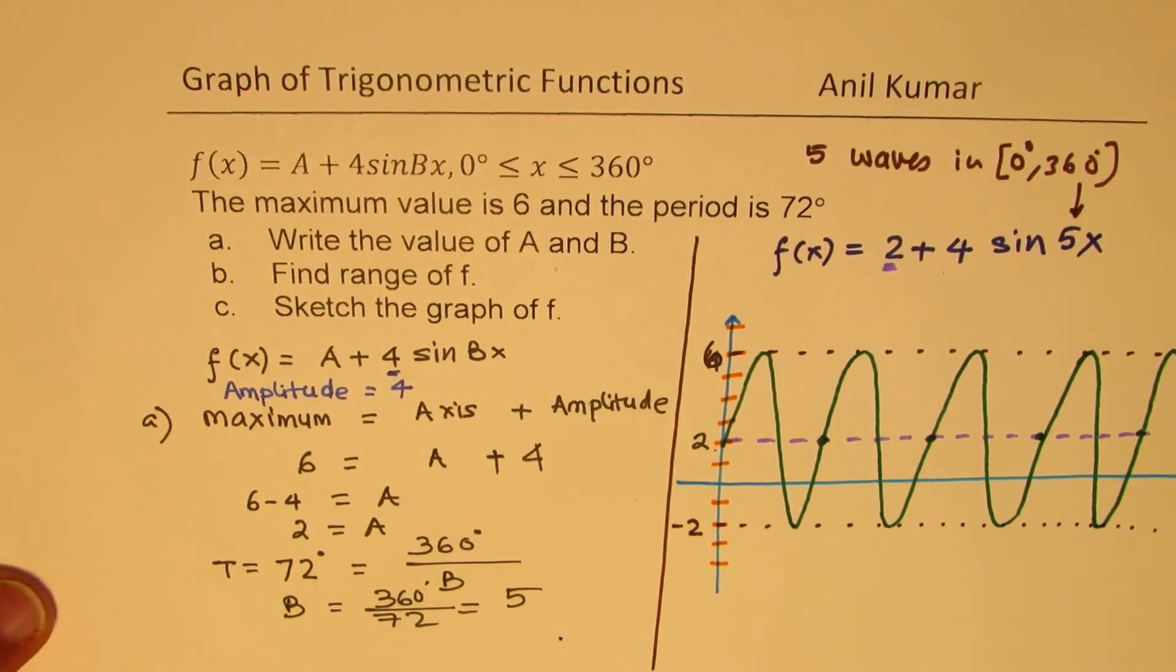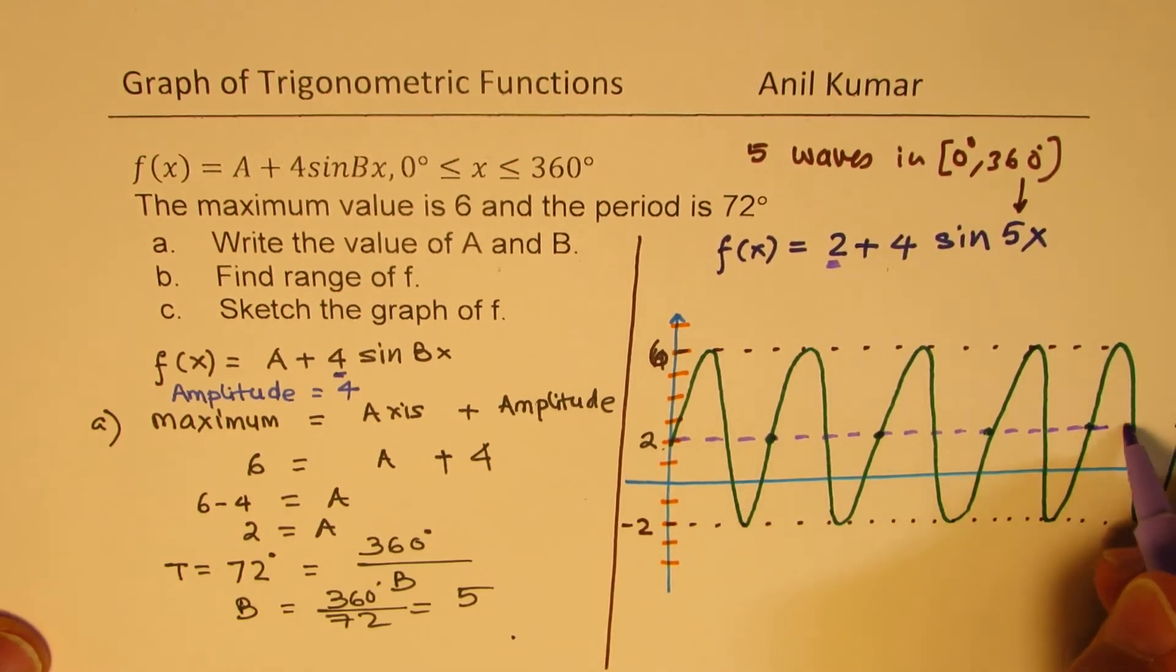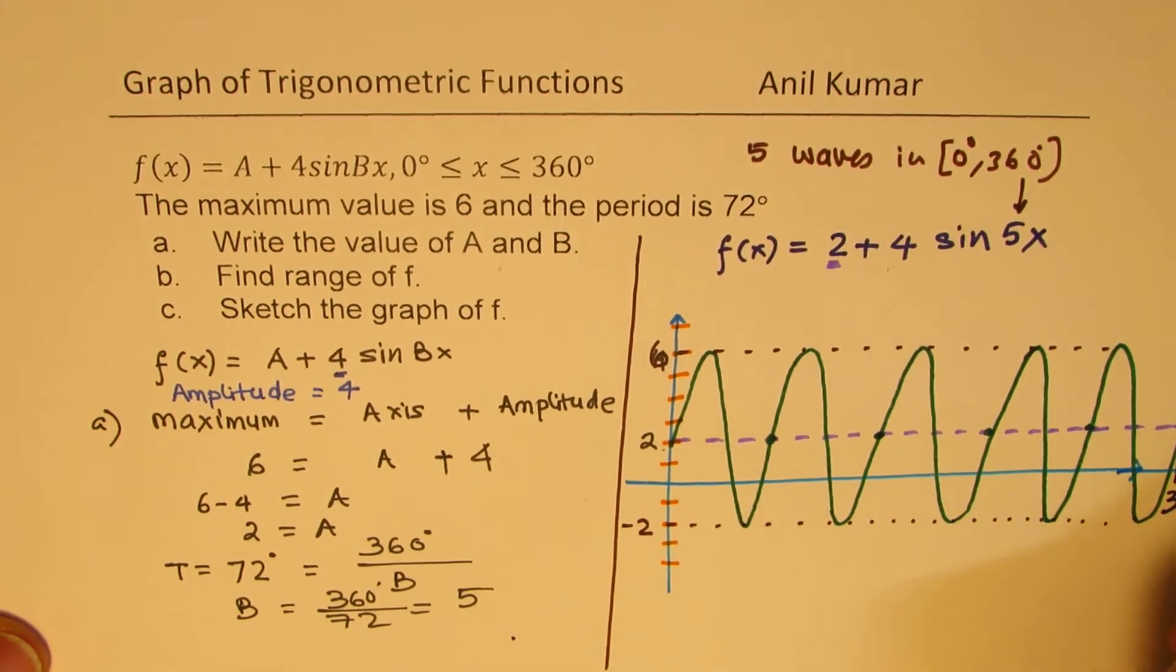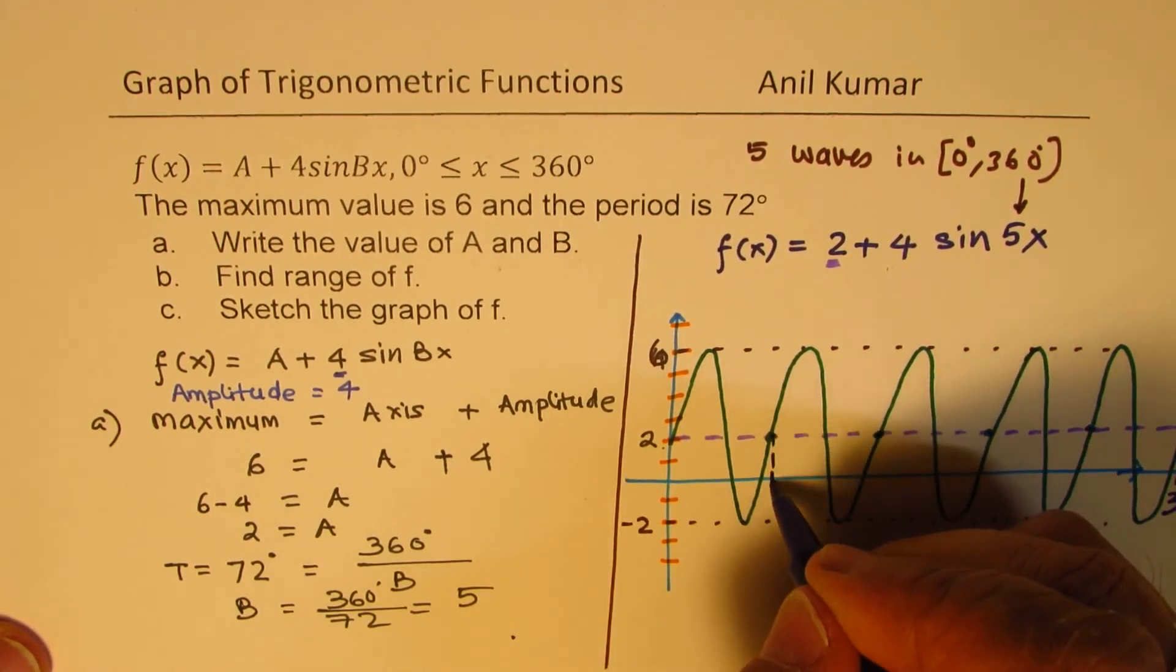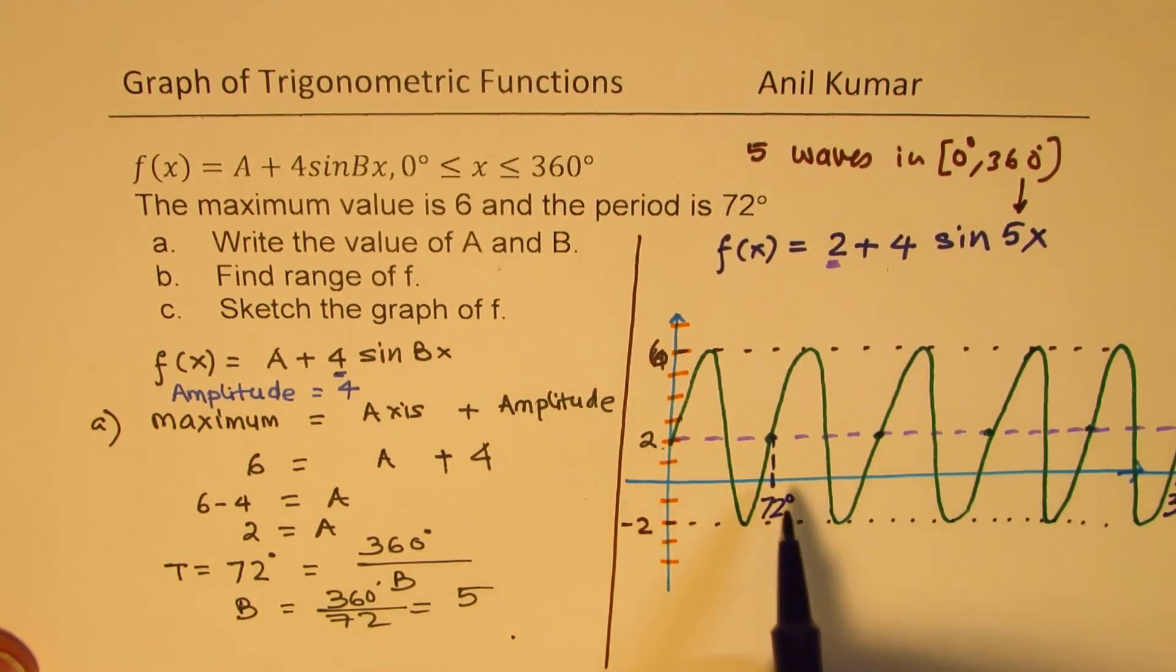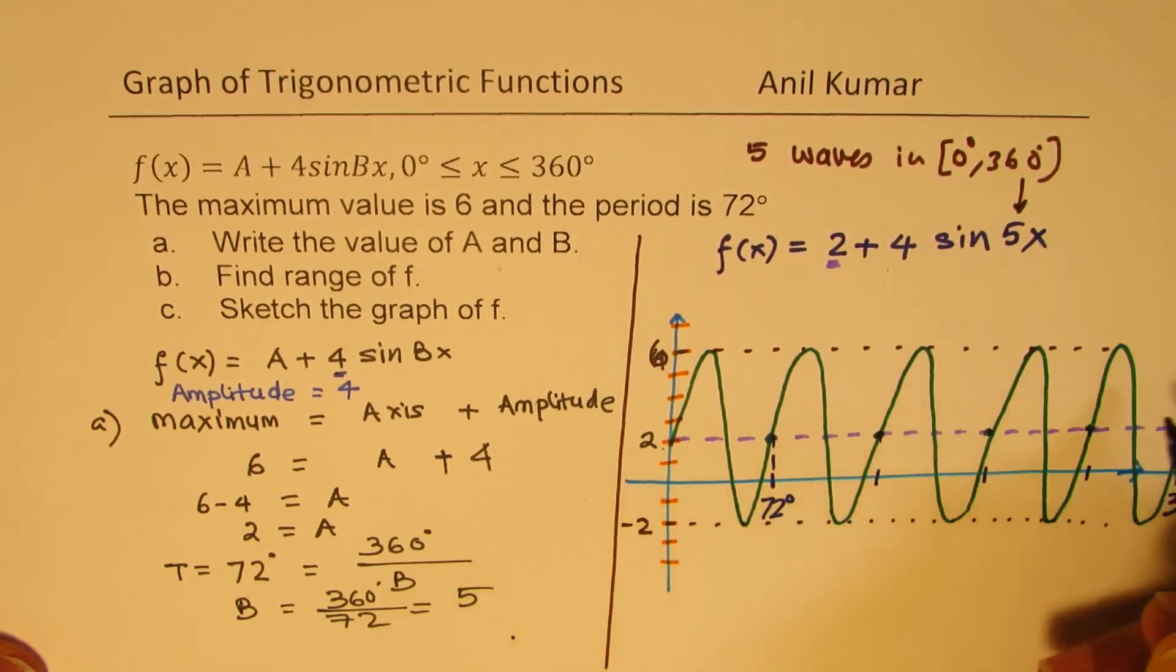So, let me just switch the paper slightly on the left side to show you the wave now. So, we have 5 different waves, and that is how you are going to sketch the given function. So, let me mention the time period here. These are multiples of 72. All these are multiples of 72. Perfect.